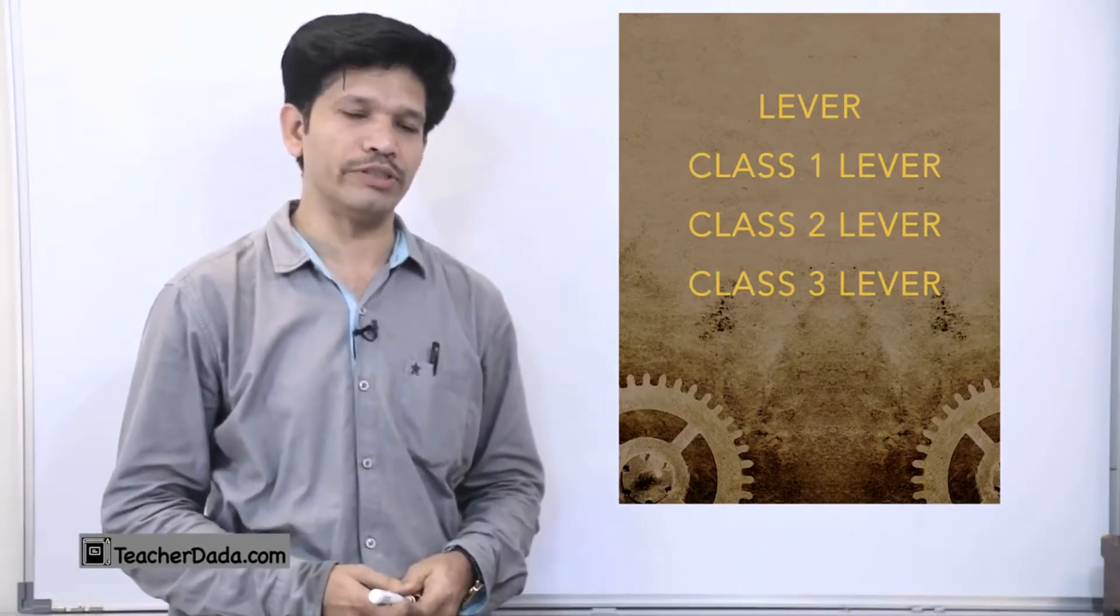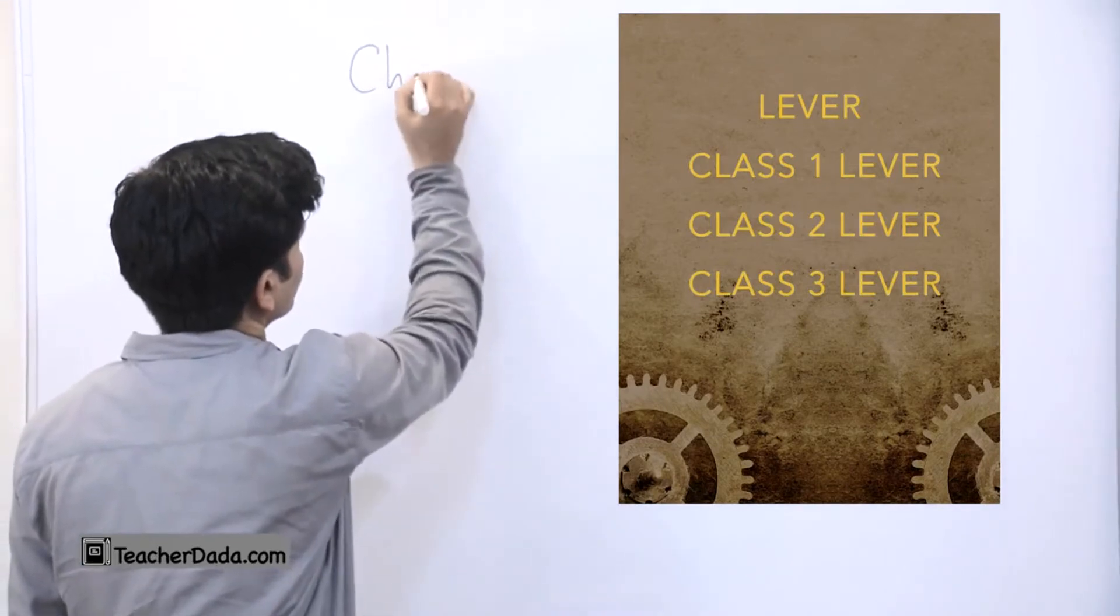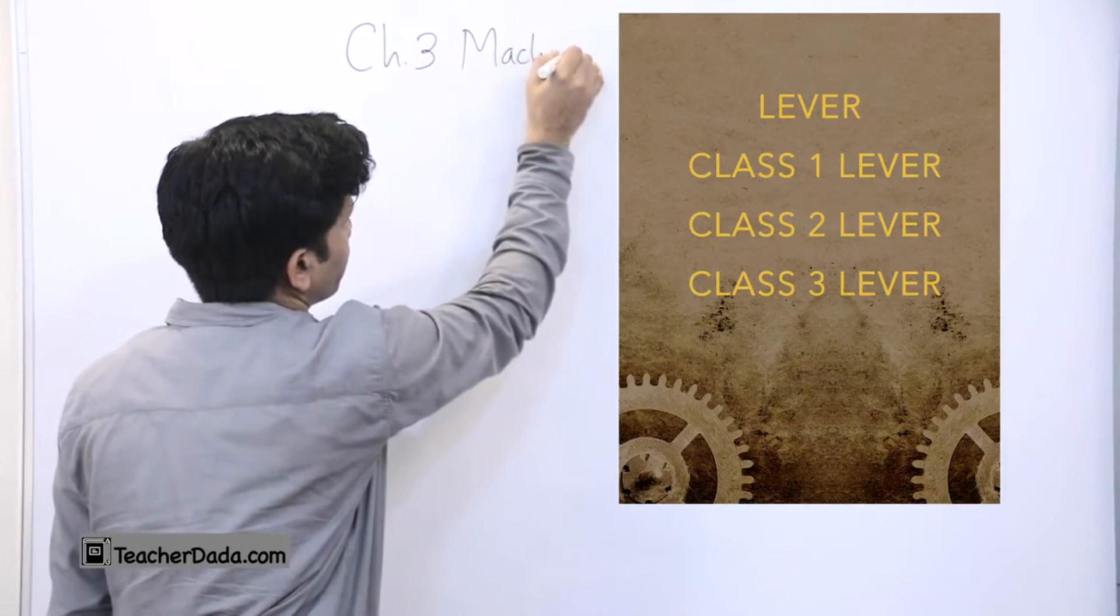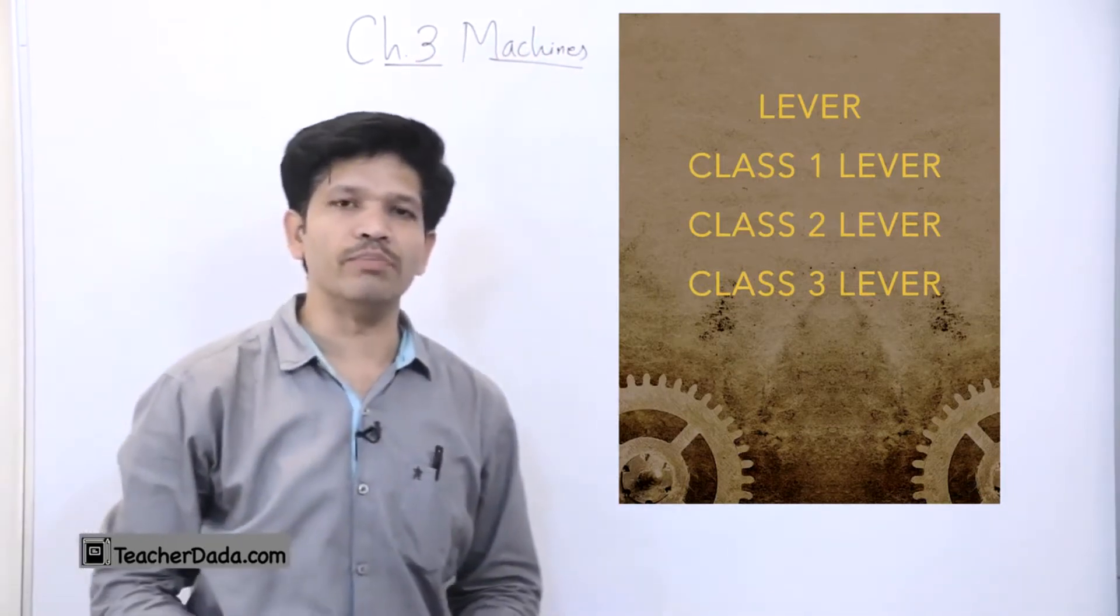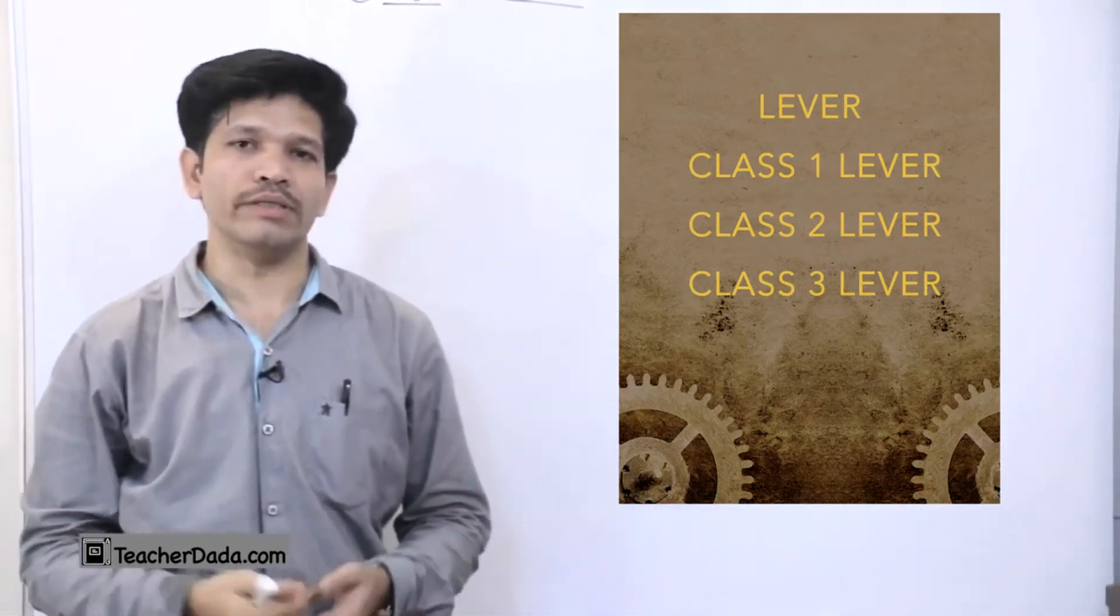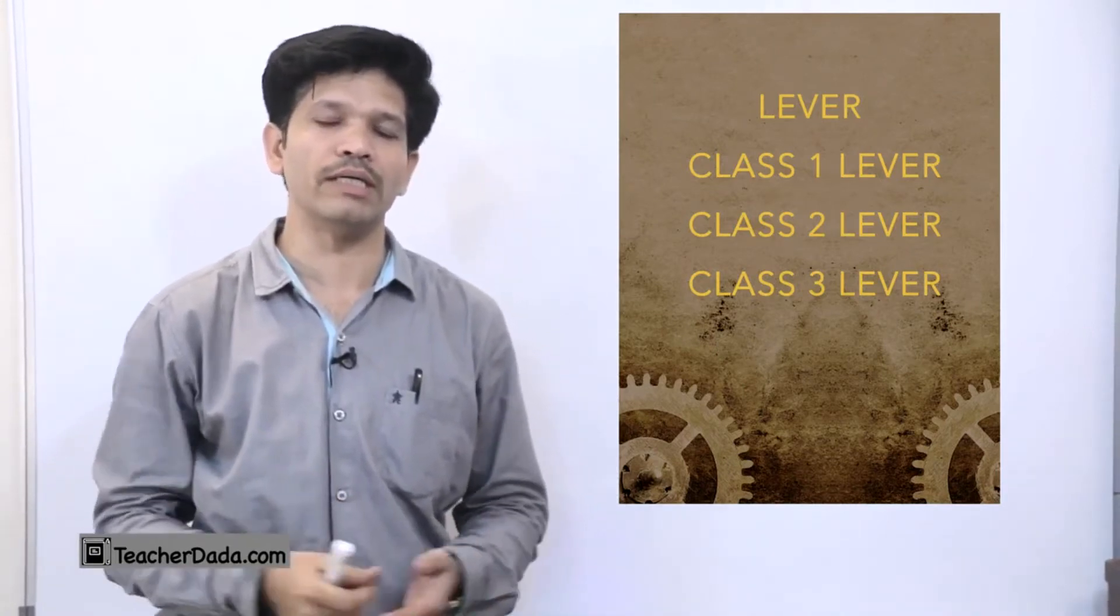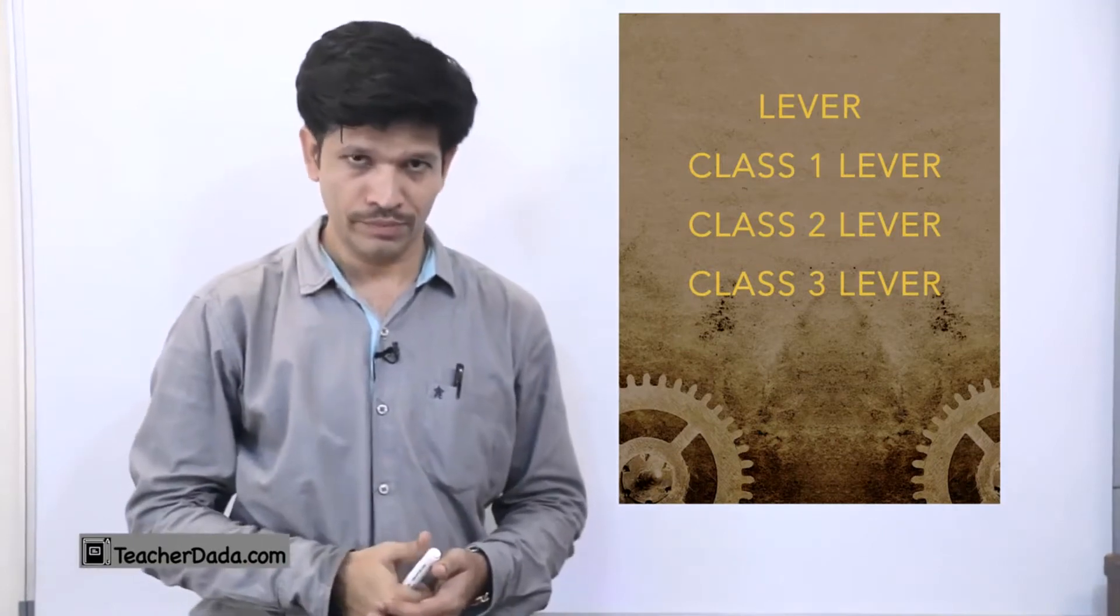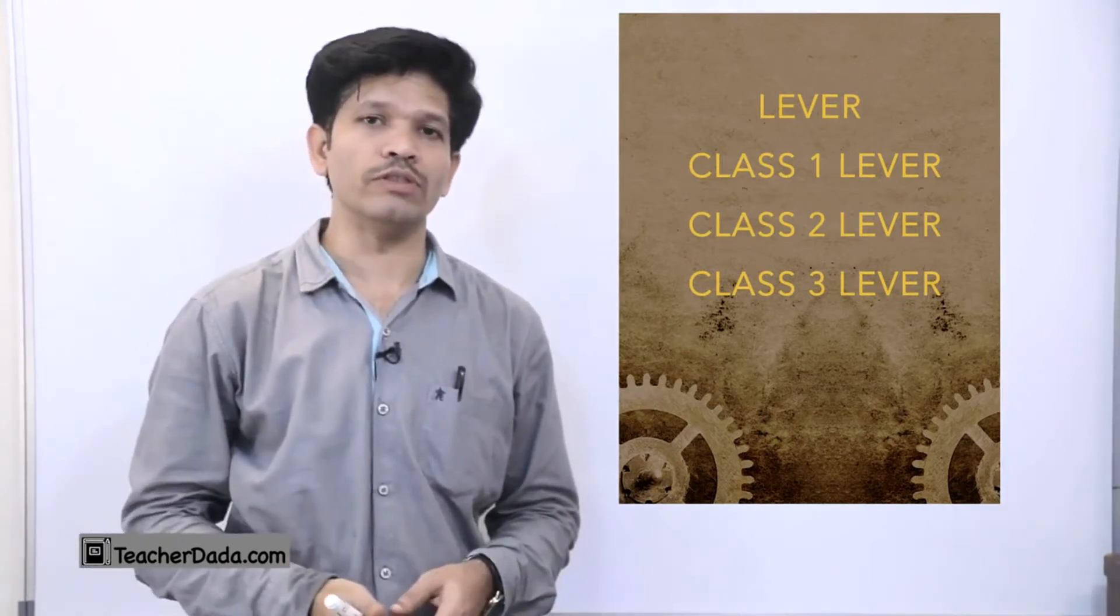Let us see what machines are exactly. Machines are simple devices which help us to overcome resistance. They help us as force multipliers, speed multipliers, and they are also used in changing the direction of effort. These are the three applications or uses of machines.